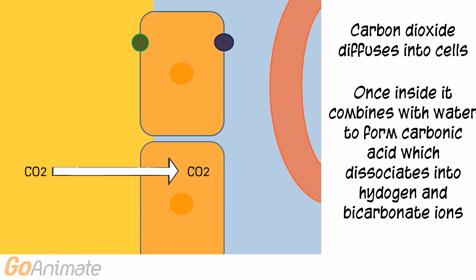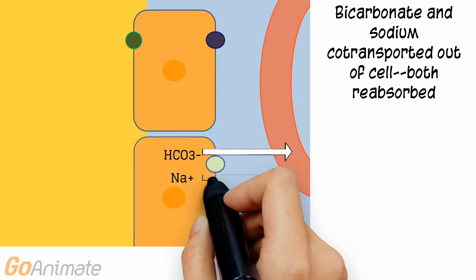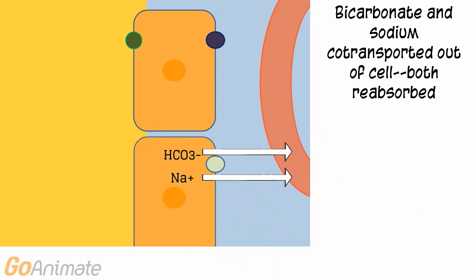Bicarbonate ions are also reabsorbed. Carbon dioxide diffuses into the cell. Once inside, it combines with water to form carbonic acid, which dissociates into hydrogen and bicarbonate ions. The bicarbonate ions are co-transported out of the cell with sodium and end up in the peritubular capillaries.